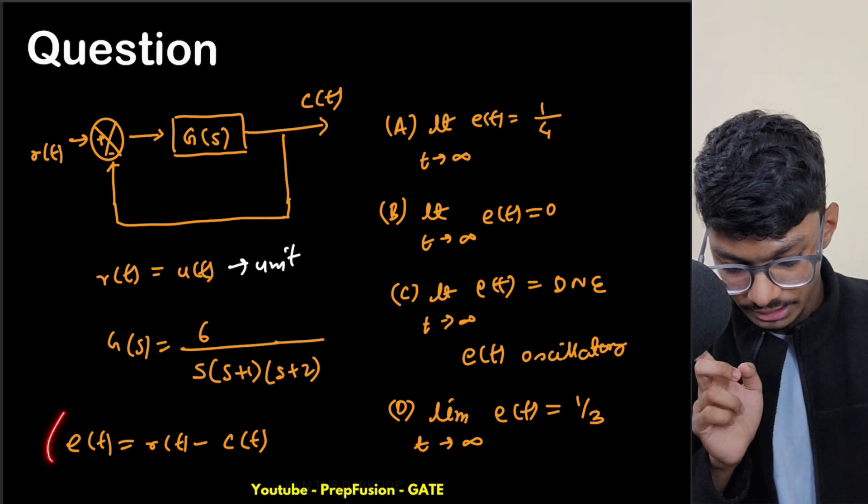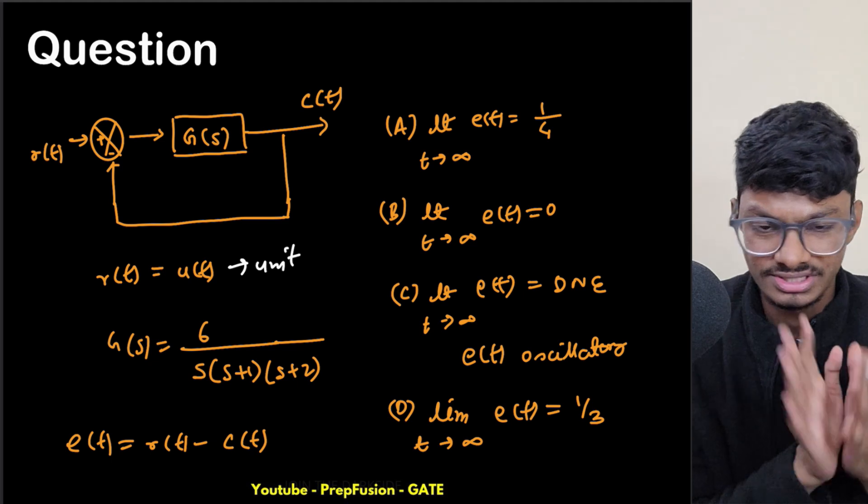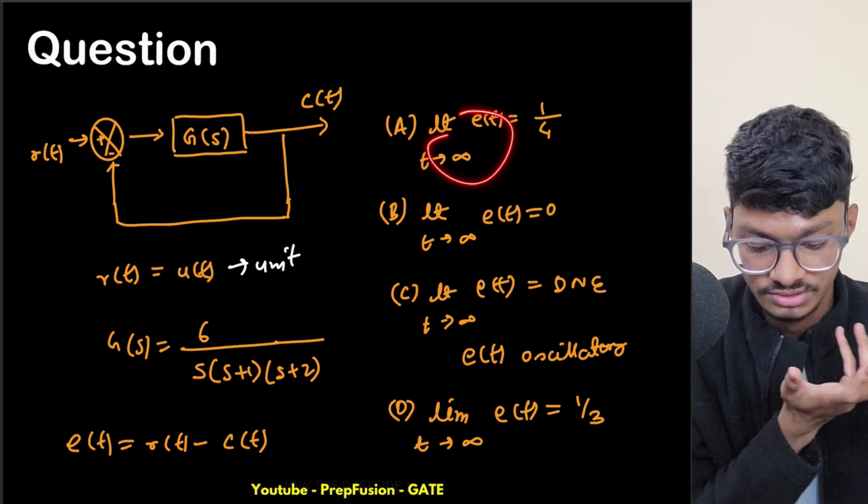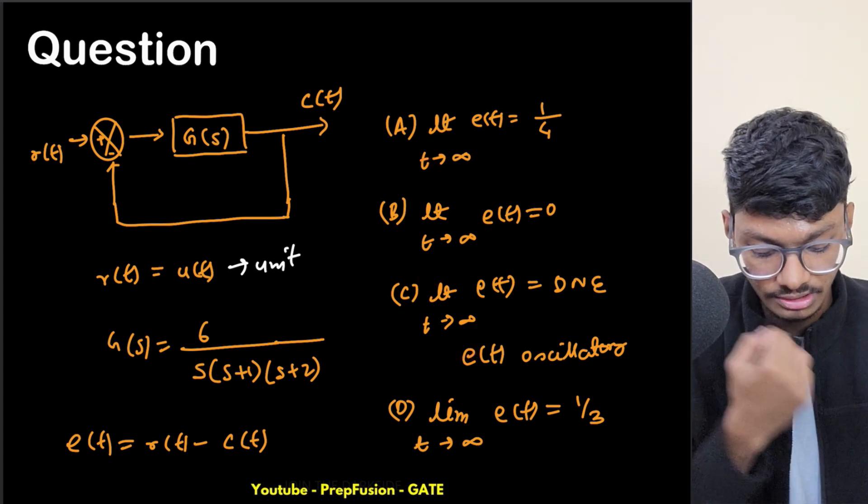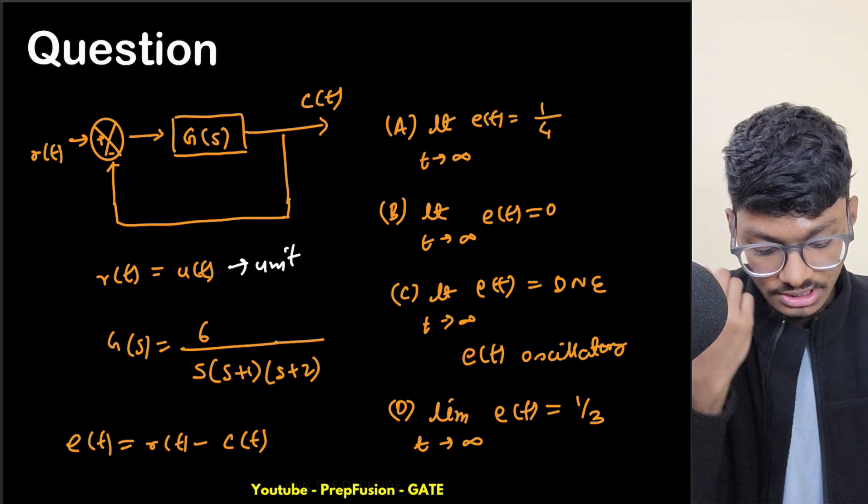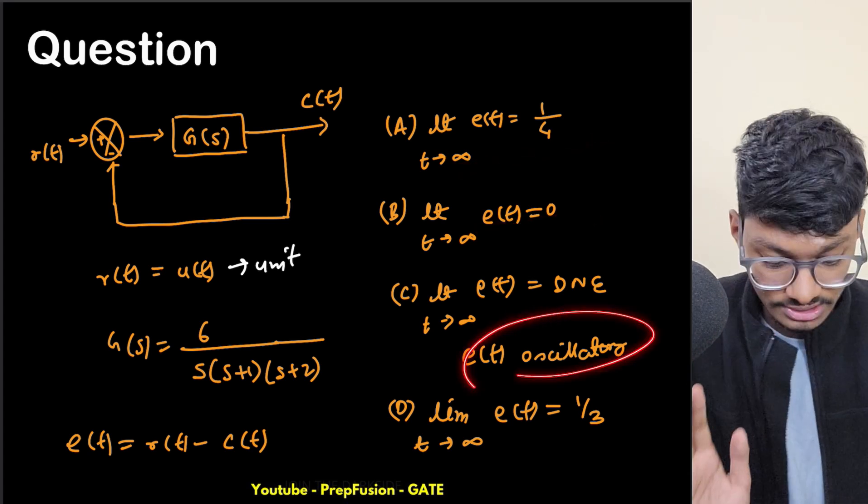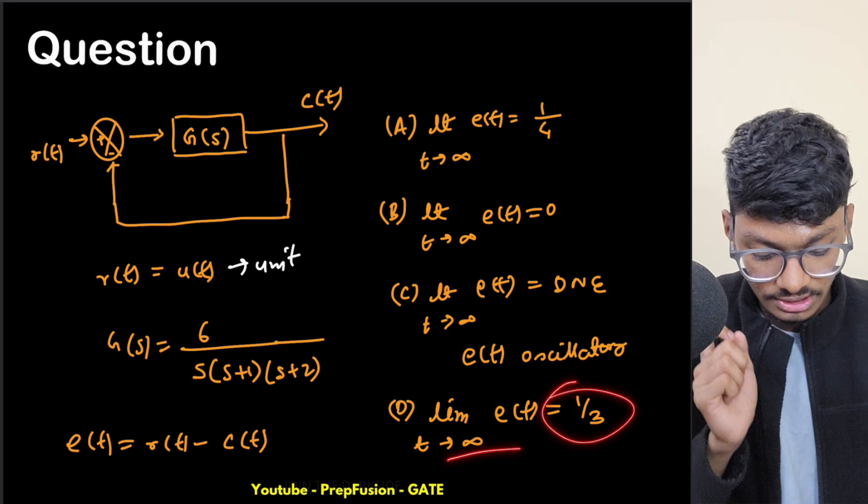Now e(t) is defined as r(t) minus c(t), the error form. You have to find the steady state error, which is the limit as t tends to infinity of e(t). The options are: 1/4, zero, it does not exist (oscillatory), or 1/3.